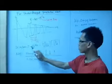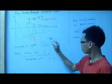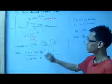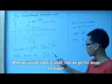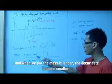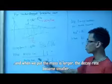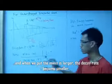This is the decay rate sigma equal to epsilon. And from this formula we can find that when we put the mass is small we will have a decay rate is bigger. When we put the mass is larger we will have a decay rate is smaller.